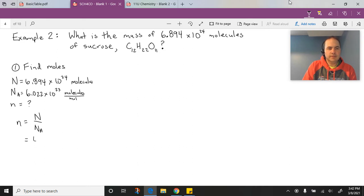So we're going to take 6.894 times 10 to the 24th and divide it by 6.022 times 10 to the 23.